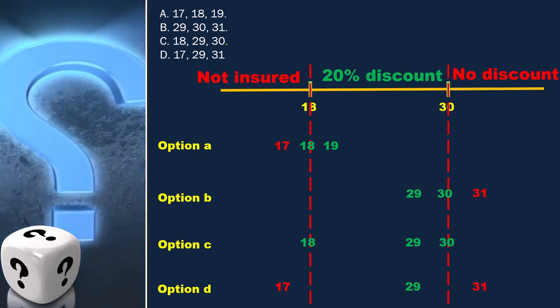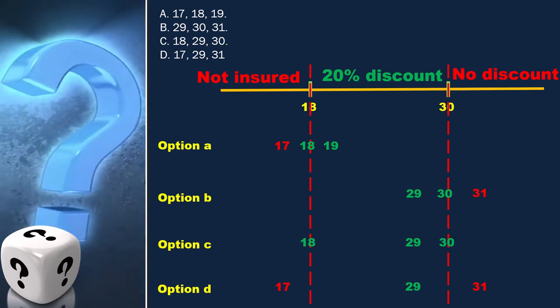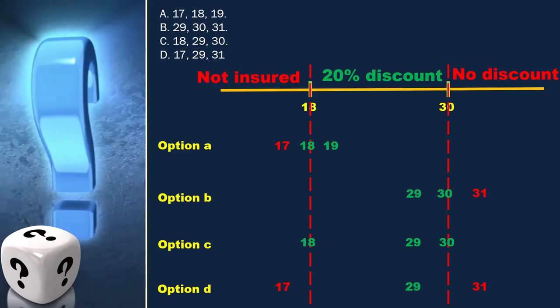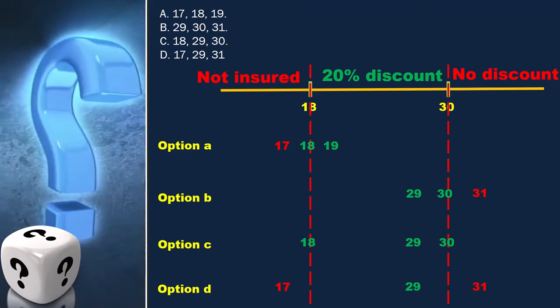As per the question, we have to find which of the following values for age are in the same equivalence partition.